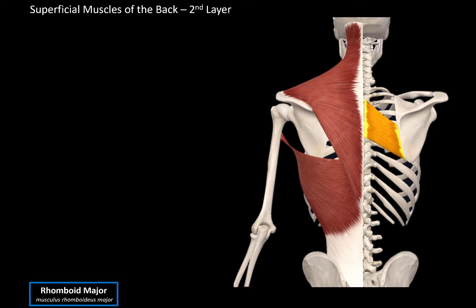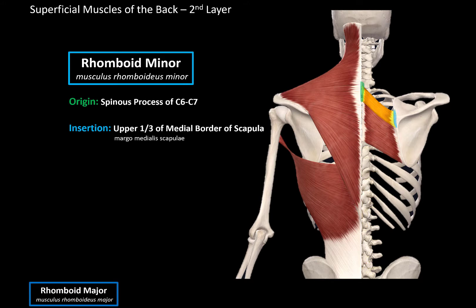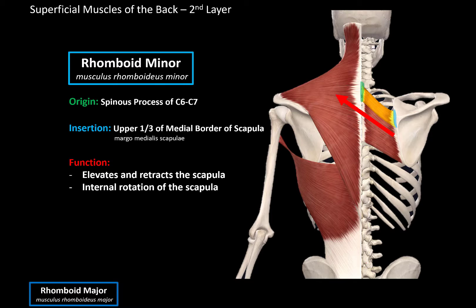Then we have the rhomboid minor, which is this one. It originates from the spinous processes of C6 to C7, and inserts at the upper one-third of the medial border of the scapula. It is located superior to the rhomboid major, and its function is more or less the same — elevation and retraction of the scapula, as well as internal rotation of the scapula.